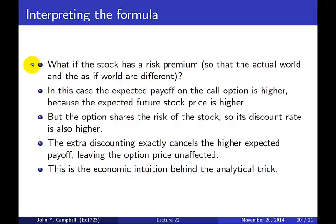Now consider the situation where the stock has a risk premium, so the actual world and the as-if world differ. If the stock has a risk premium, the stock price rises faster on average, so the expected payoff on the call option is higher because the expected future stock price is higher. However, the option shares the risk of the stock, so its discount rate is also higher. The extra discounting exactly cancels the higher expected payoff, leaving the option price unaffected. This is the economic intuition for why the expected return on the stock doesn't affect the option price and why risk-neutral pricing gives the right answer.